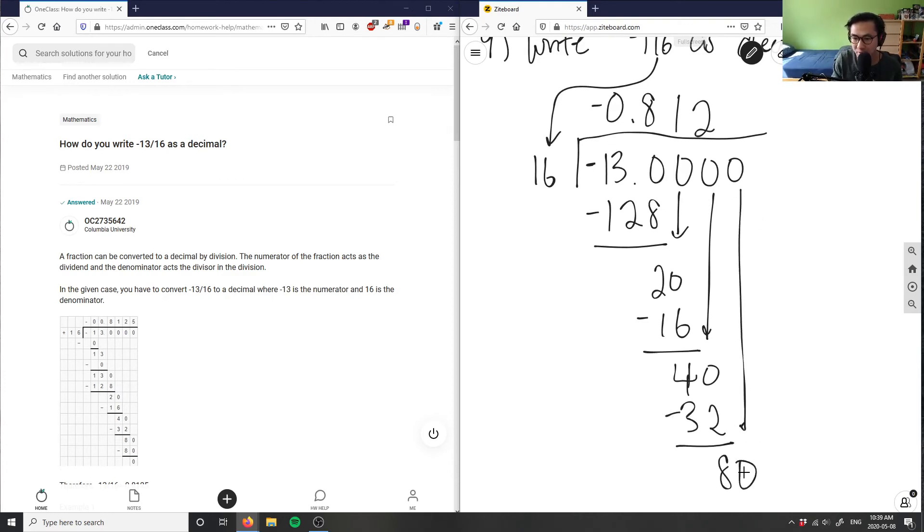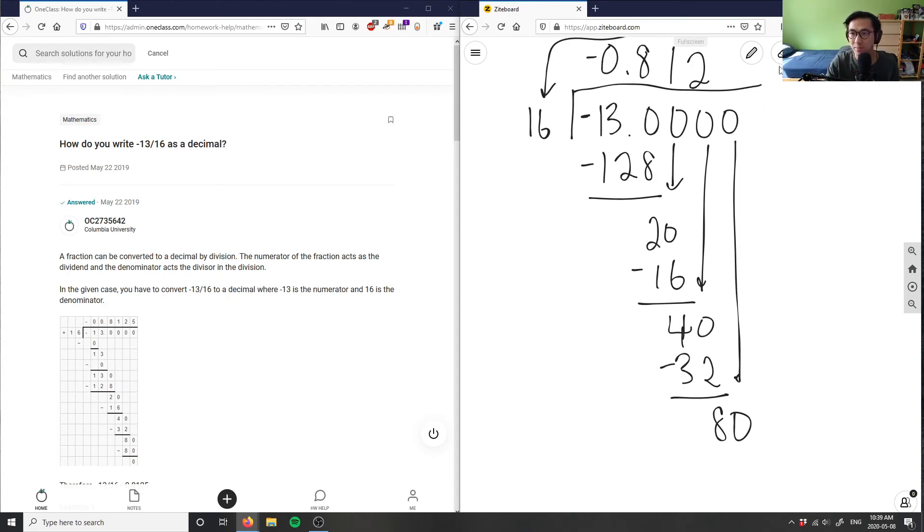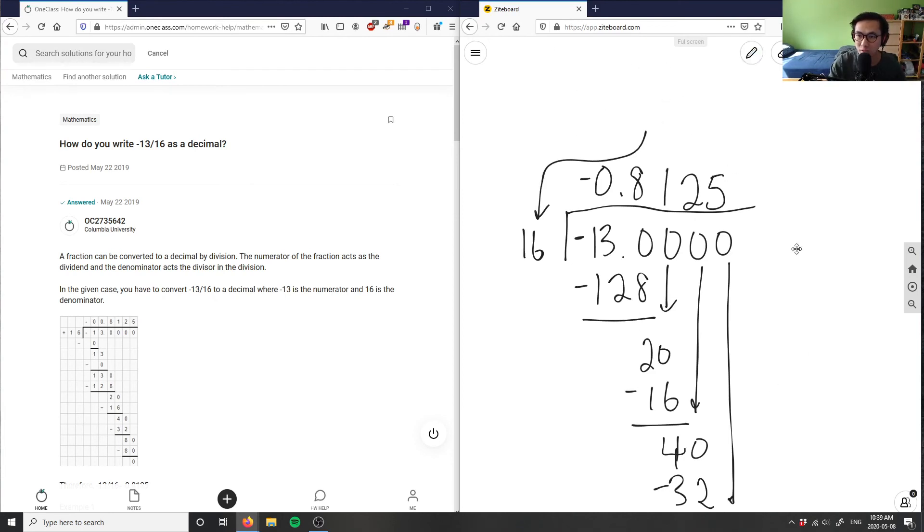And then finally bring down the 0 here. What number goes into 80 here? 16 times 5 would give me 80 here. So 5 here. 5 times 6 here is 30. So 0 here. 5 times 1 here is 5, plus 3, because I carried the 3 over, would be 8 here. So this here is our decimal. And I had no remainder, which is great.